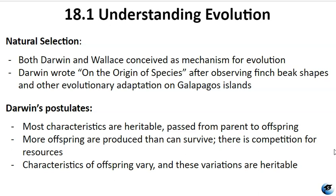According to Darwin, natural selection arises from three principles. First, characteristics are inherited from parents to offspring. Second, more offspring are produced than can survive due to limited resources, leading to competition. Finally, offspring exhibit variations in their characteristics, and those with inherited traits that enhance competitive abilities have a higher likelihood of surviving and reproducing. These advantages become more common in subsequent generations, resulting in population changes over time — a process known as descent with modification. Natural selection is the sole mechanism known for adaptive evolution, driving greater adaptation of populations to their environments.